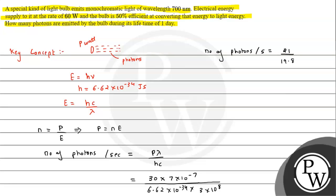21 divided by 19.86 into 10^20. This is the result we are getting. We have to resolve it, we get 1.06 × 10^20 photons per second.